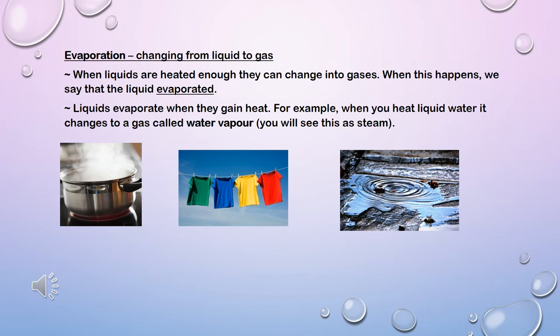The best way to observe evaporation is to watch a pot with boiling water. Please do this under supervision of an adult. When you watch the water boiling you will see steam rising out of the water. This steam is the gas called water vapor. As the water boils you will notice that the water in the pot has become less. This happens because the water evaporates and turns into water vapor.